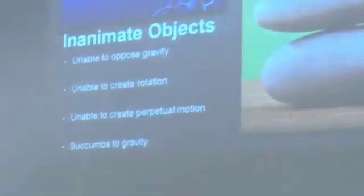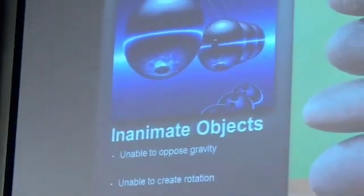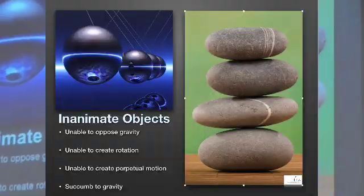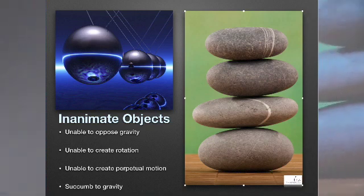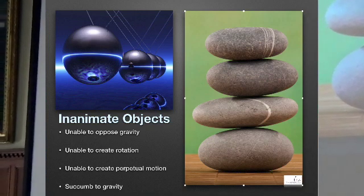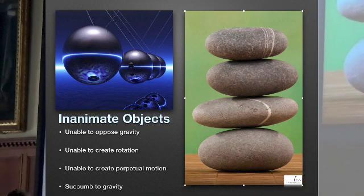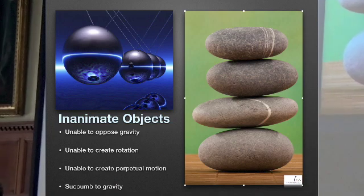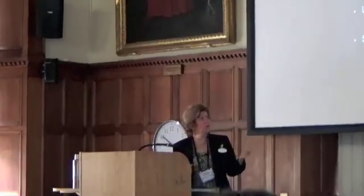With inanimate objects it's quite obvious that they cannot oppose gravity at any time — they cannot consciously will themselves above the table as you or I would. They are also unable to create this rotation or perpetual motion. So their nature is to succumb to gravity.